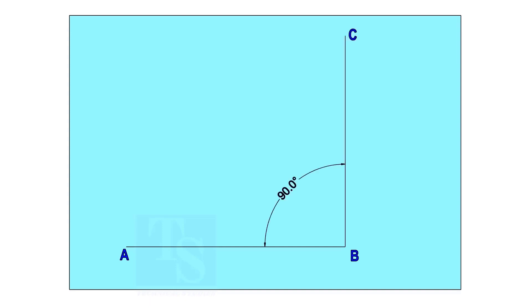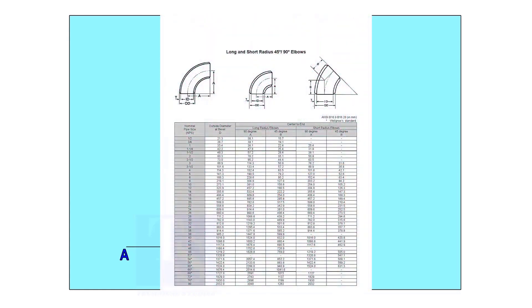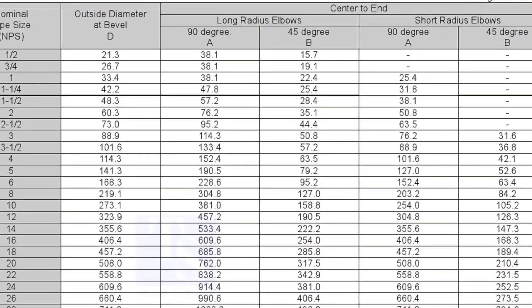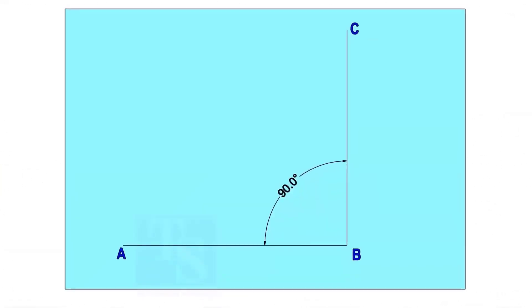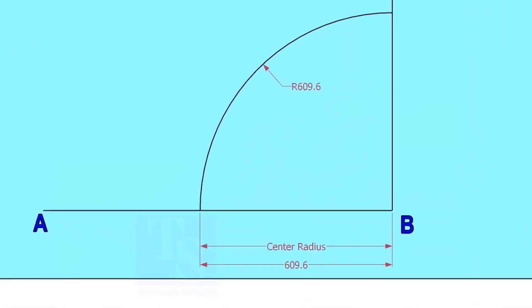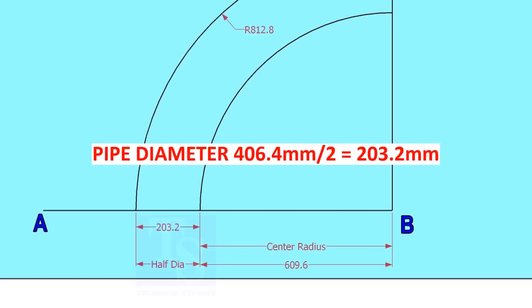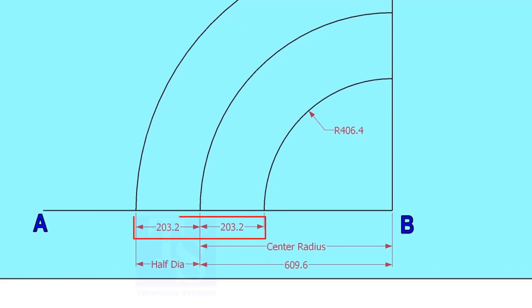Mark line AB and a perpendicular line BC. Let us check the center radius of 16-inch long radius elbow. Draw an arc with the center radius 609.6 millimeters. Mark the half OD arcs on both sides of the center line.